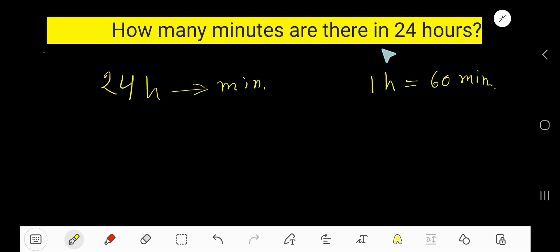How many minutes are there in 24 hours? We need to convert 24 hours into minutes. To convert 24 hours into minutes, we will use this conversion equation: 1 hour equals 60 minutes.